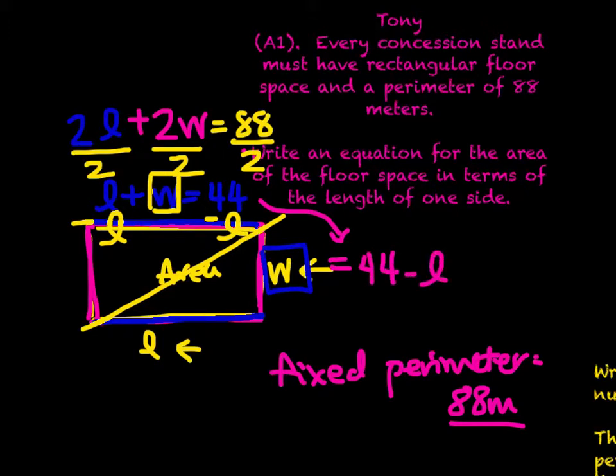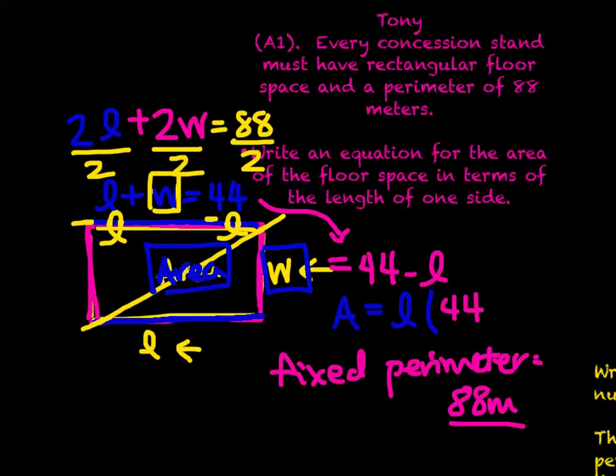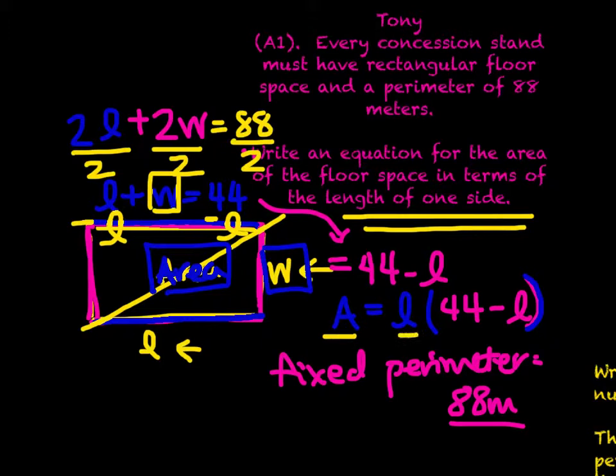If we need to figure out the area, we can just simply say area equals the length times the width. But instead of writing w, we are writing 44 minus l. So our equation that we can write to find the area in terms of the length of one side is A equals l times (44 minus l).